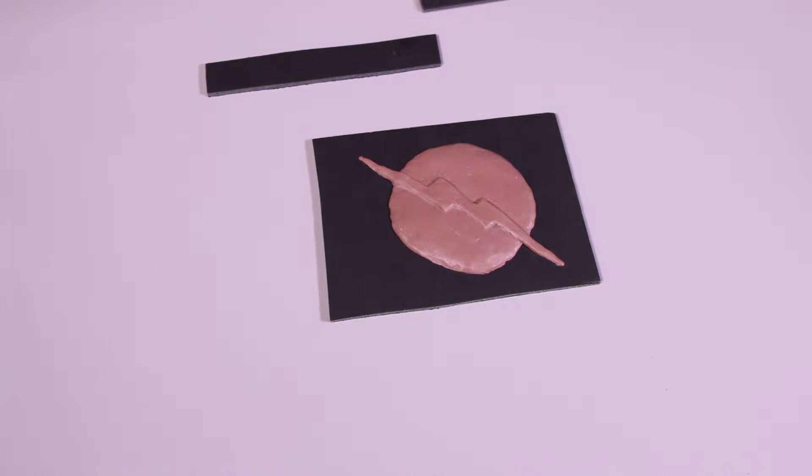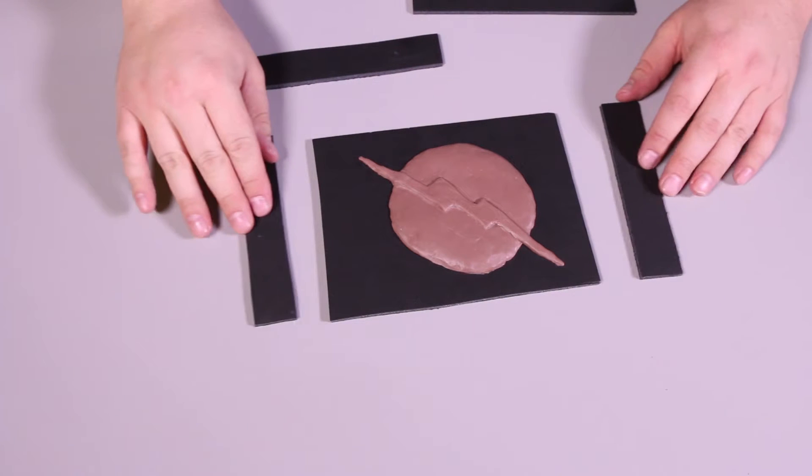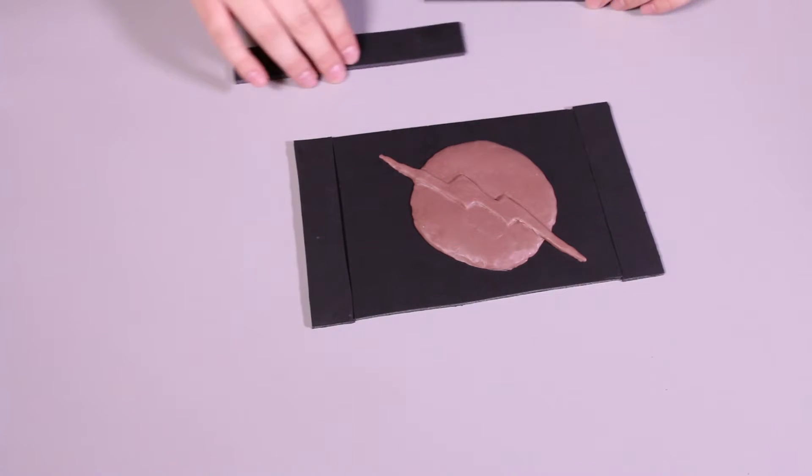First you'll want to mount your item onto the foam board and then cut out individual pieces that go higher than the item that is on the foam board.